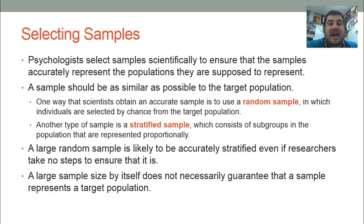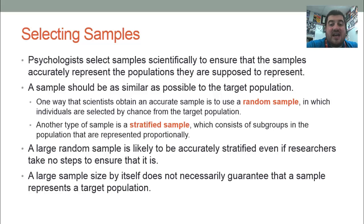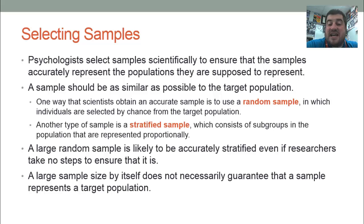If we have a large enough sample size — let's say we're doing 50,000 students — it's more likely to be accurately stratified, even if we don't take steps to ensure that it is. So a large sample size means that it will likely be stratified, but it does not guarantee that it represents the target population.